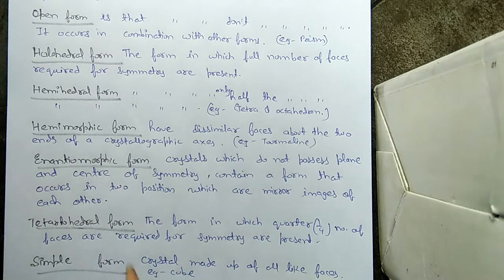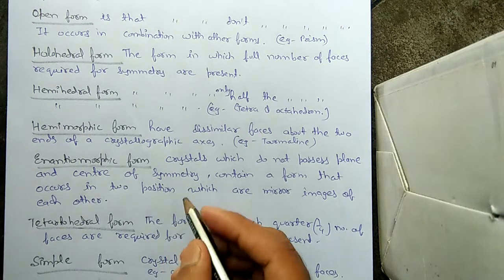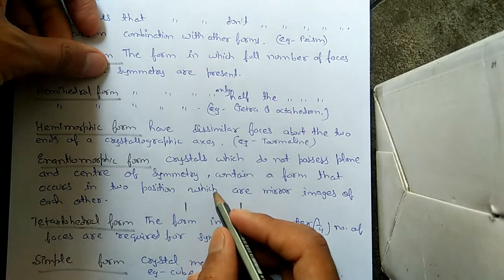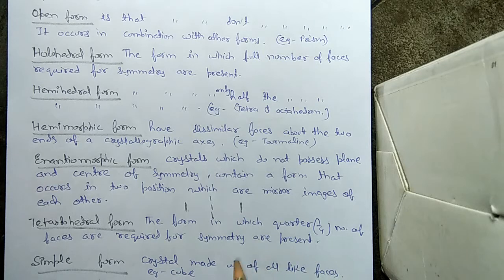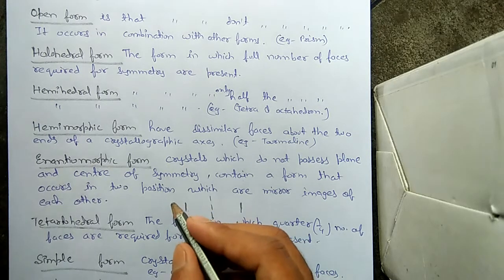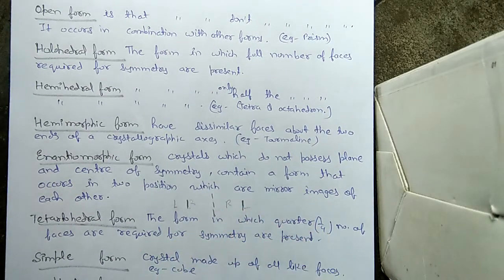The enantiomorphic form is very important, so understand it properly. Crystals which do not possess a plane of symmetry or center of symmetry contain a form that occurs in two positions — one here and another here — and which are mirror images of each other. Suppose there is a mirror in between them, so both are mirror images of each other, with no plane or center of symmetry. Such forms are called enantiomorphic forms — literally describing left and right, just as we see our image in the mirror.